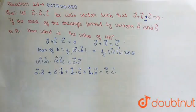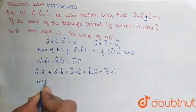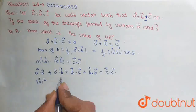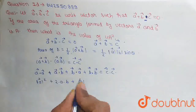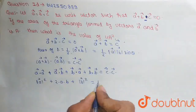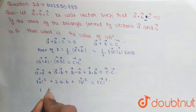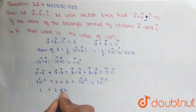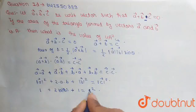Now, A dot A vector is equal to the modulus of A squared. Similarly, A dot B and B dot A will be equal to 2 times A dot B, plus modulus of B squared, and this is equal to modulus of C squared. Since A, B, and C are unit vectors, their magnitude is 1, so this becomes 1 plus 2 times A dot B plus 1 equals 1 squared, which is 1.